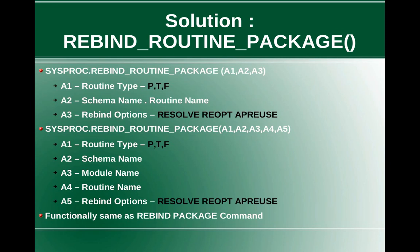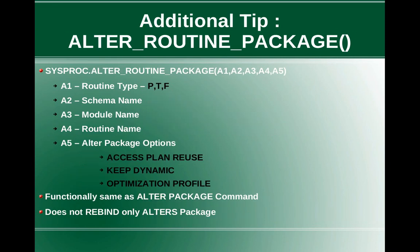There are actually two variations of the same routine — one taking three arguments and another taking five arguments. The second variation: a1 is routine type PTF, a2 is schema name, a3 is module name, a4 is routine name, a5 is the rebind options. Functionally, rebind_routine_package is the same as the rebind package command. There is also another routine available under sysproc.alter_routine_package. This also takes five arguments: routine type, schema name, module name, routine name, and the alter package options like access plan reuse and keep dynamic optimization profile. This routine is functionally the same as the alter package command, but it will not rebind — it only alters the package.